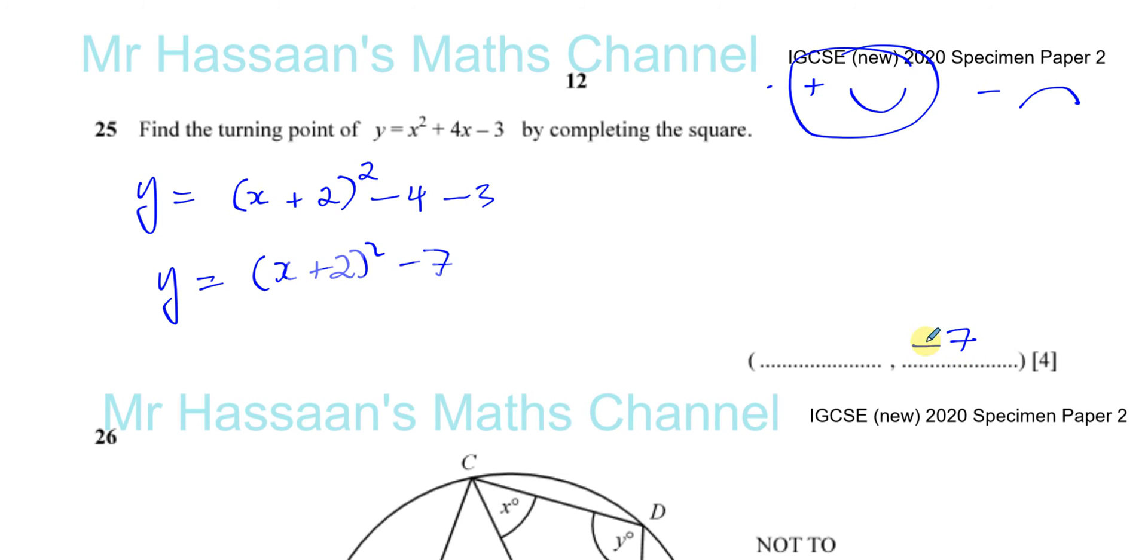And what's the value of x for which that becomes minus 7? Well, that's when this bracket becomes 0. 0 minus 7 is the lowest it can be. So what value of x makes this 0? If I put x equals minus 2, x plus 2 becomes 0. So there we have the turning point.